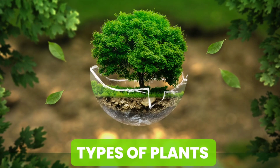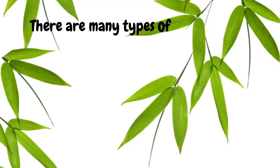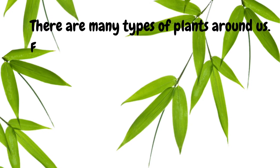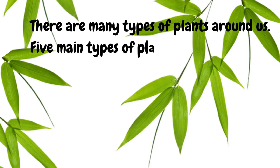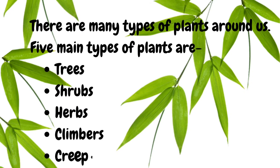Types of plants. There are many types of plants around us. Five main types of plants are trees, shrubs, herbs, climbers, and creepers.